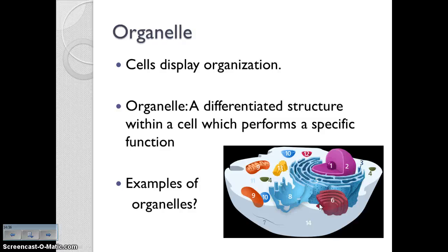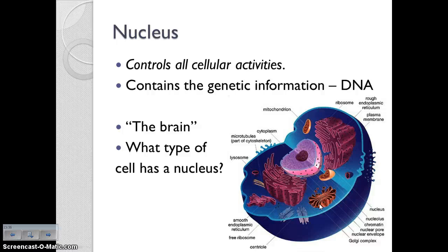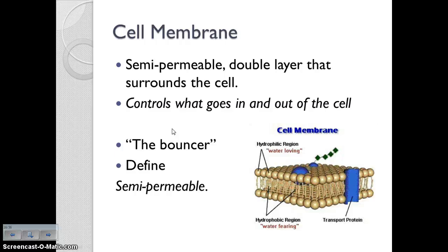Fill in the chart for the organelles, including the function and what type of cell they are found in. First up is the nucleus, which may be the most important organelle of all because it controls all cellular activities — that's why we call it the brain of the cell. This is where you're going to find the genetic information, DNA. What type of cell has a nucleus? A eukaryotic cell — so that's going to be animal and plant.